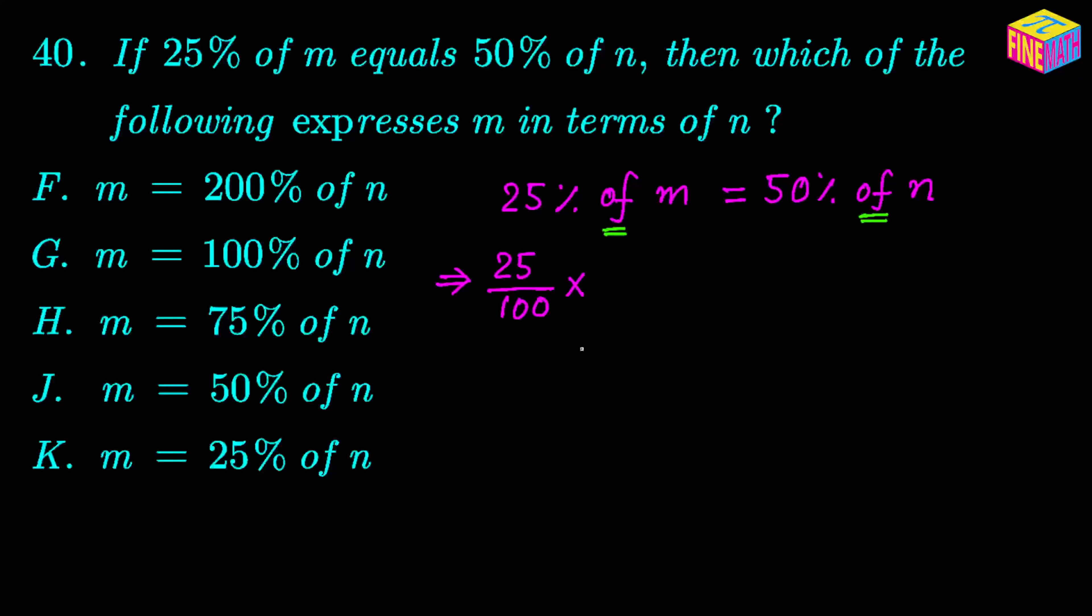So we can say 25 over 100, that is 25%, of—'of' is being replaced with the multiplication sign—and then m. So 25 over 100 times m is equal to, similarly on the right hand side we have 50%, so 50% can be written as 50 over 100, and then 'of' can be replaced with a multiplication sign, and then we have n right here.